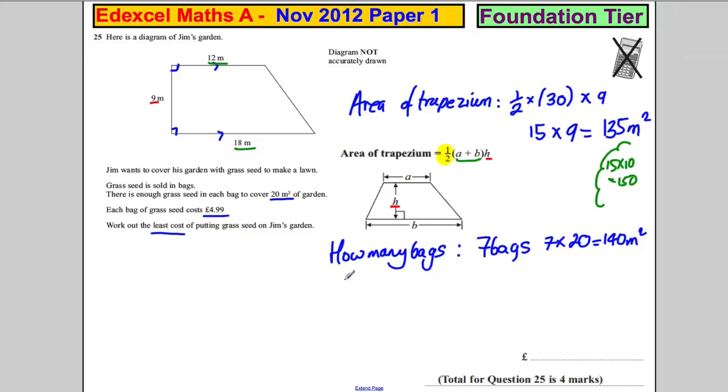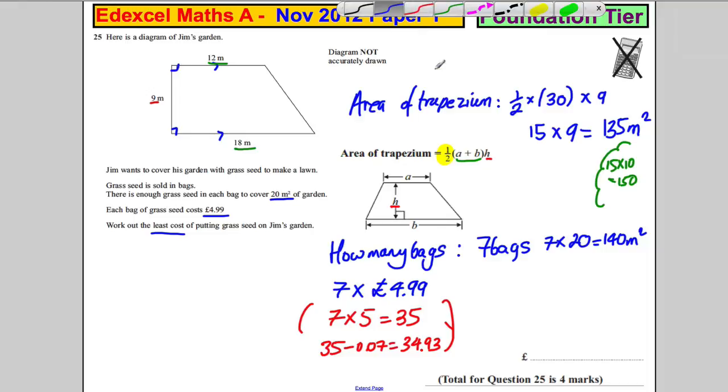So the least cost, the cost of that, well, he wants to therefore do seven multiplied by £4.99. Again, let's use some number sense. Let's instead do seven multiplied by five, which is 35. And then what we need to do, we need to take off that seven times five pounds. We've counted up a penny seven times. We need to take off seven pence there. So that's going to be equal to 35 and we're going to subtract seven pence. So it's going to be £34.93. So the cheapest he can get it for is 34 pounds and 93 pence. And we're done.